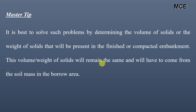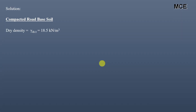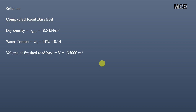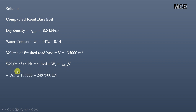First we determine the weight of solids in the compacted soil. For the compacted road base, dry density = 18.5 kN/m³, water content = 14%, and finished volume = 135,000 m³. The weight of solids required equals dry density multiplied by the volume of the finished road base: 18.5 × 135,000 = 24,975,000 kN. This is the weight of solids which we require from the borrow pit soil.